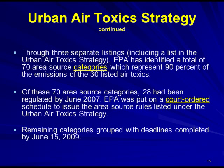Of these 70 area source categories, 28 had been regulated by June of 2007. EPA was sued for the delay and was put on a court-ordered schedule to issue the area source rules listed under the Urban Air Toxics Strategy. The remaining categories were grouped with deadlines completed by June 15, 2009.